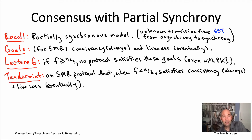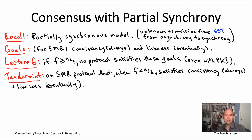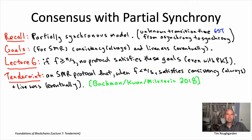Tendermint has had several iterations. The first one might have been around 2014, developed by Jay Kwan. It stabilized roughly around 2018, and that's the version I'm going to be covering here. For the 2018 version of the protocol, the authors are listed as Ethan Buchman, Jay Kwan, and Zarko Milosevic. Now let's dive into how this protocol works, beginning with a summary of some of the high-level ideas.